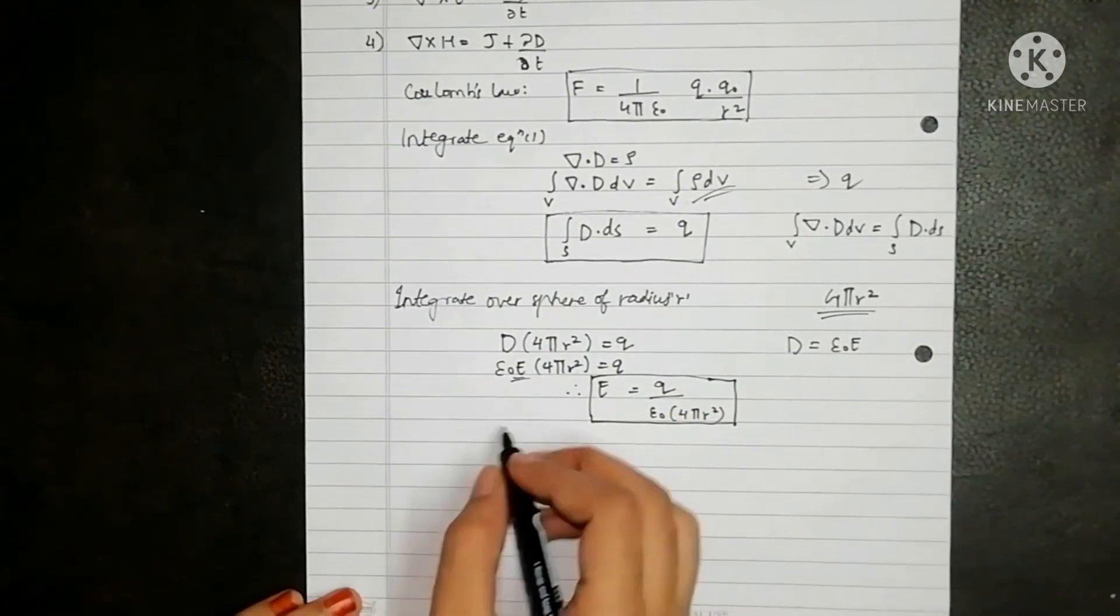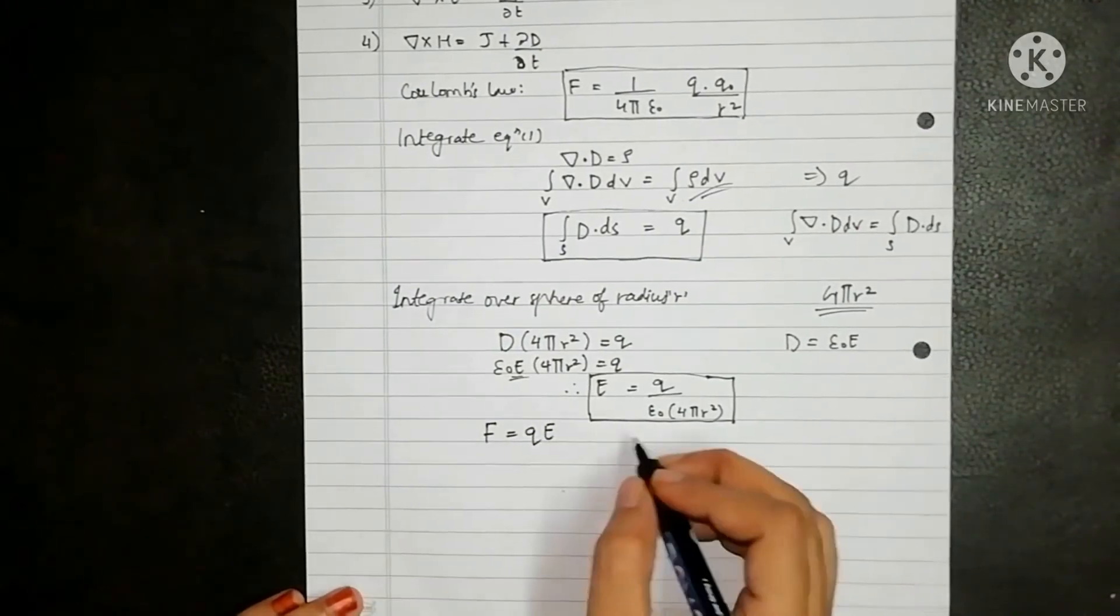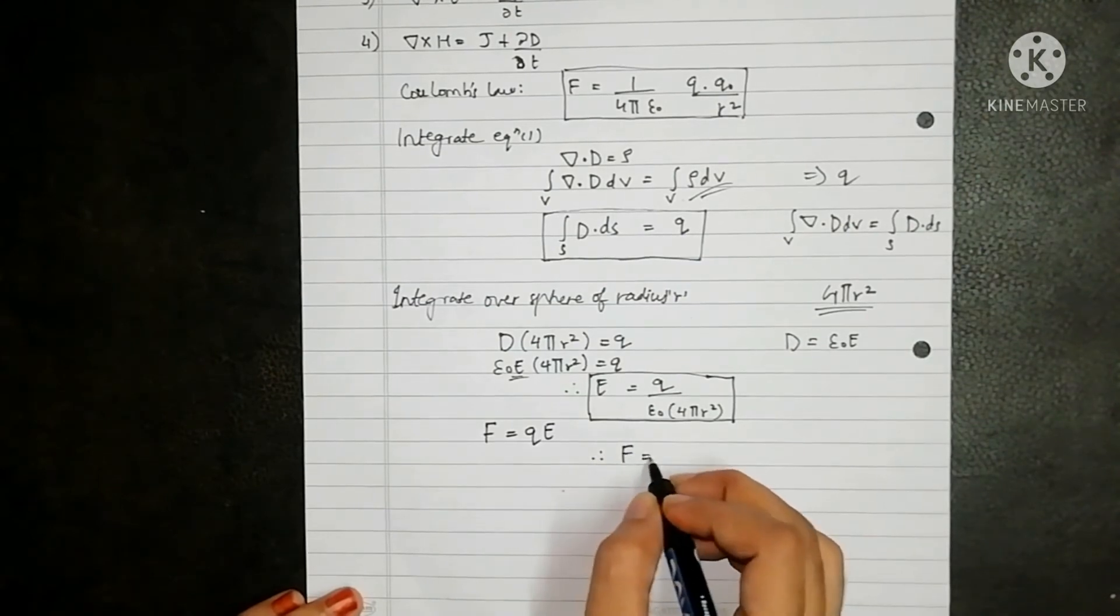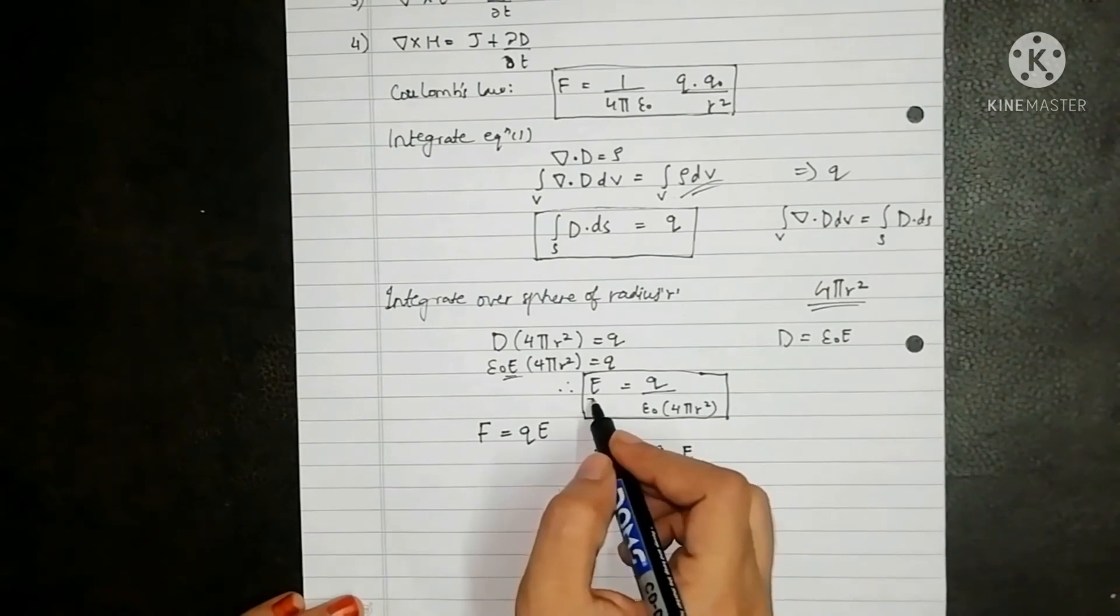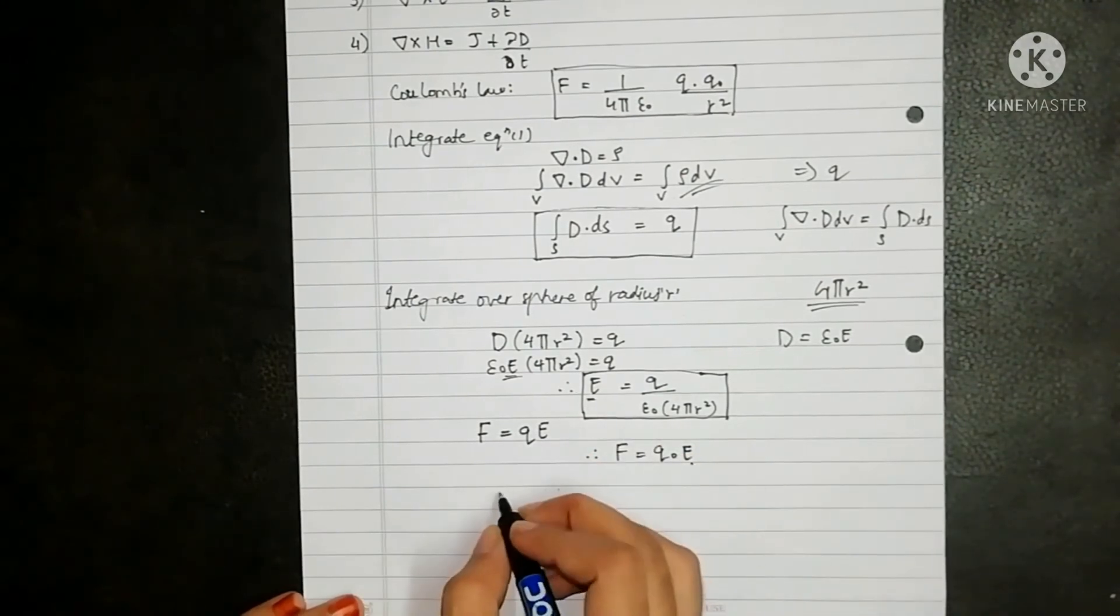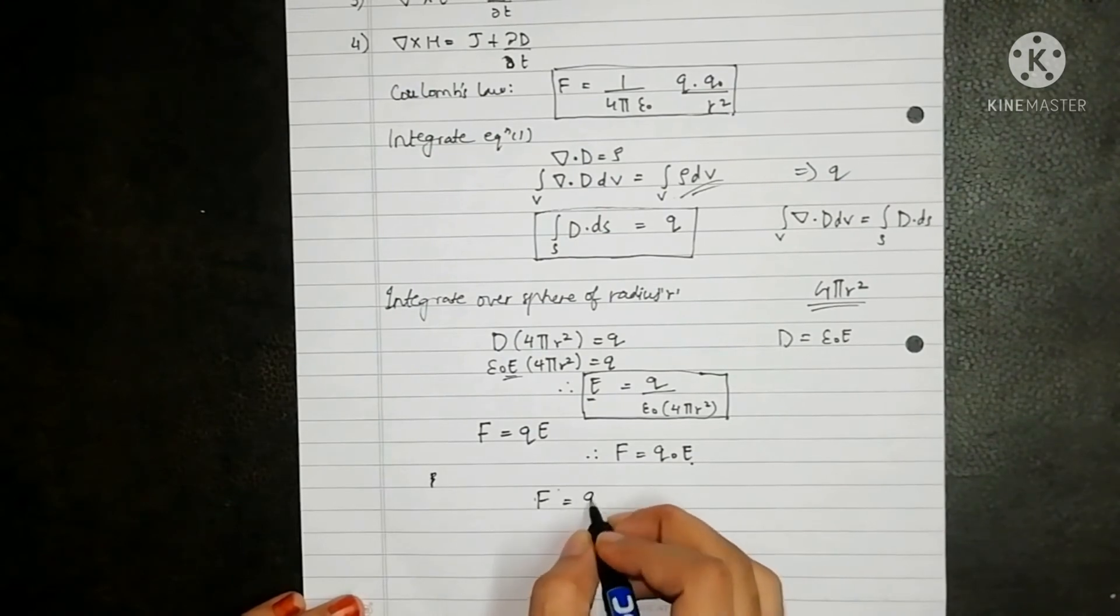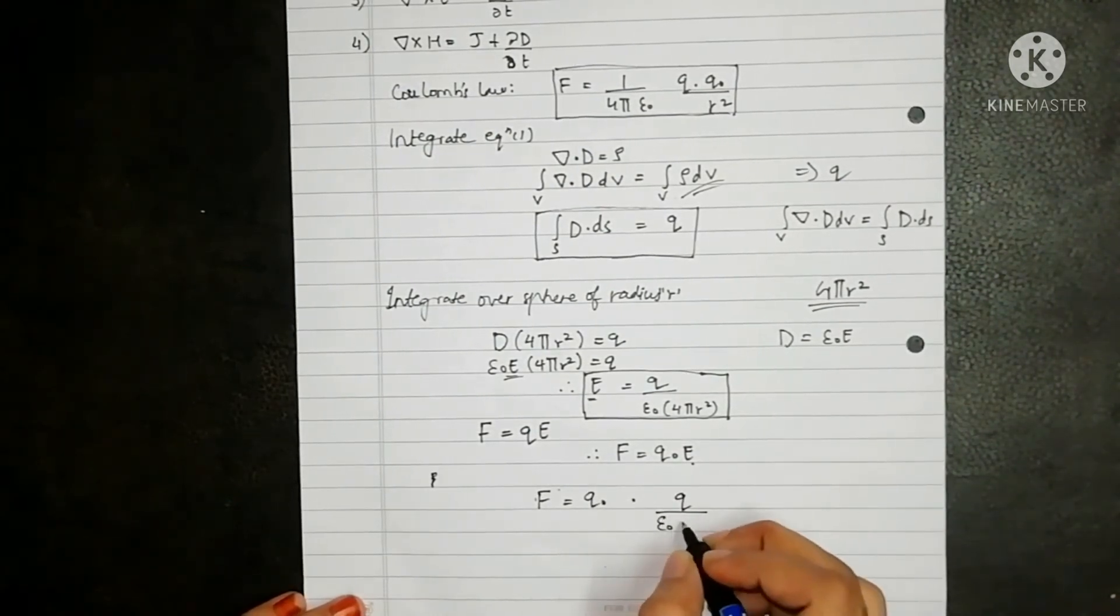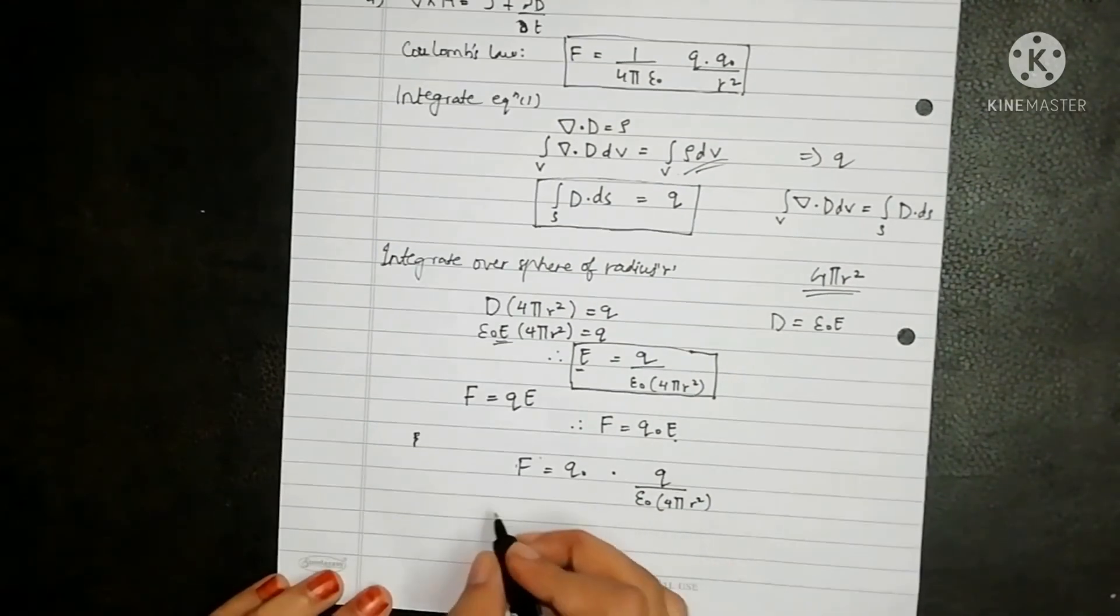Now we know F is given as Q naught into E. Let this be the test charge, so the force will be given as F is equal to Q naught E. Now I have the value of E, just substitute it here. So F is equal to Q naught into Q upon epsilon naught 4 pi r square. Now just rearrange it a little bit.